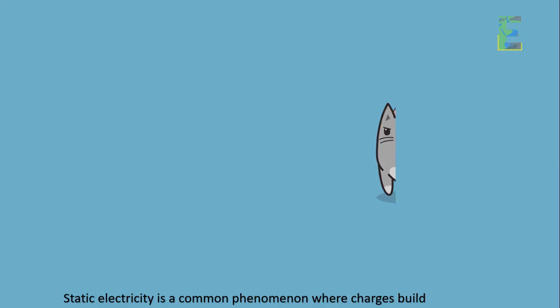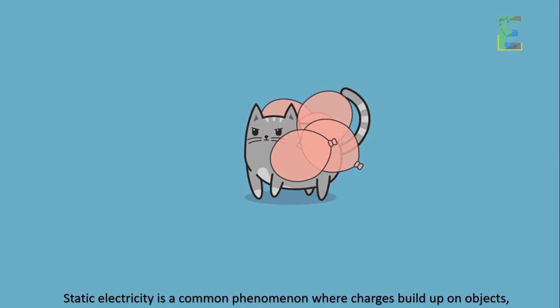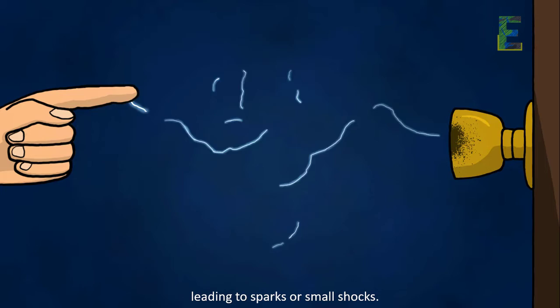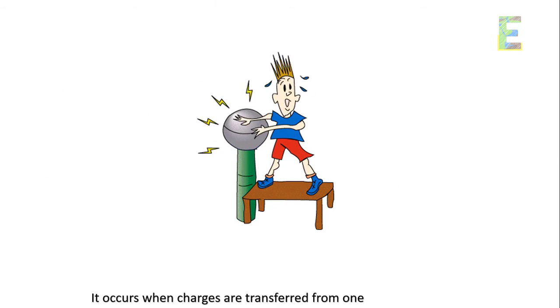Static electricity. Static electricity is a common phenomenon where charges build up on objects, leading to sparks or small shocks. It occurs when charges are transferred from one object to another.